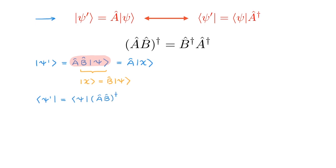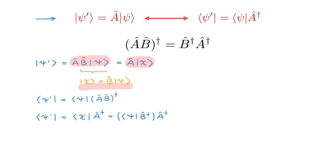Next, we write again the bra ⟨ψ'| but now we use the relation for A|χ⟩ to write it as ⟨χ|A†. Now we remember that |χ⟩ was defined as B|ψ⟩, so we can rewrite ⟨χ| as ⟨ψ|B†, and then we have an extra A†. Rearranging this final expression we obtain ⟨ψ|B†A†. Comparing the two final expressions for the bra ⟨ψ'| we see that (AB)† is indeed equal to B†A†.